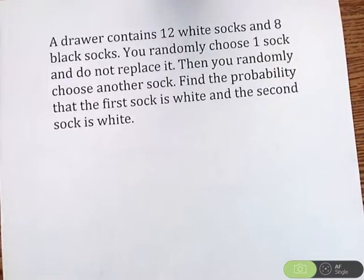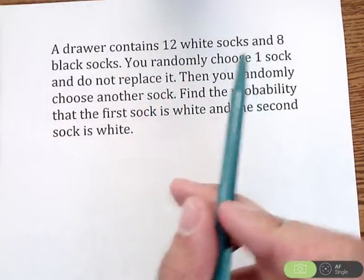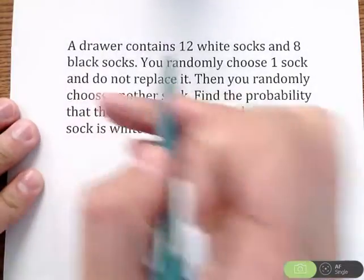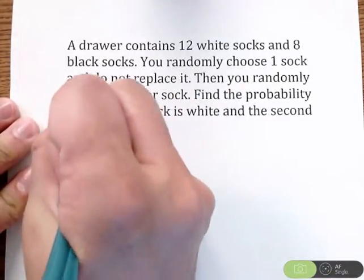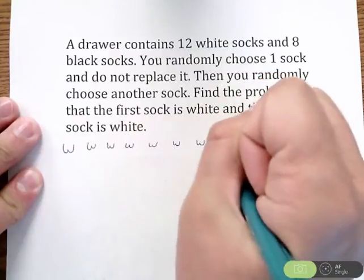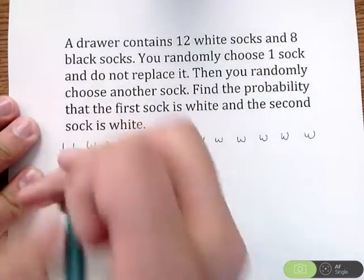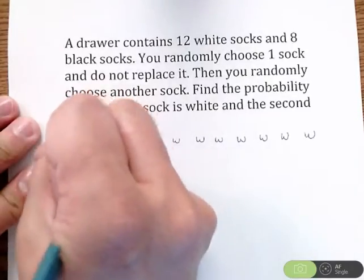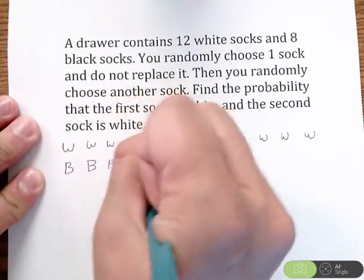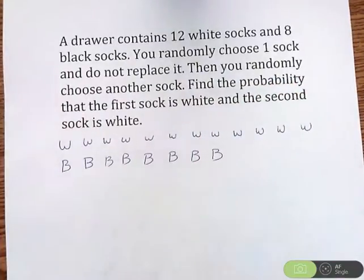Let's go to one more problem. So we have a drawer contains 12 white socks and 8 black socks. I'm going to write that out: 1, 2, 3, 4, 5, 6, 7, 8, 9, 10, 11, 12. And 8 black socks: 1, 2, 3, 4, 5, 6, 7, 8. So 12 whites, 8 blacks.